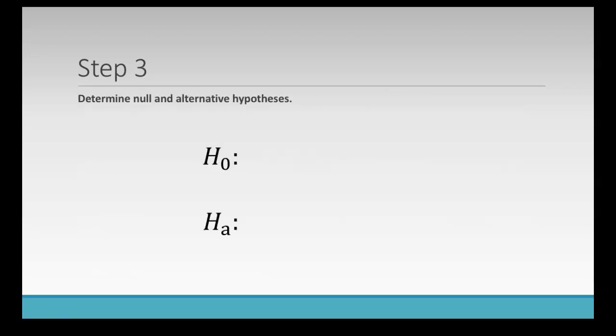Step three is to figure out which is the null hypothesis and which is the alternative hypothesis. Well the null hypothesis will always have the equality in it. So our null hypothesis here is mu is greater than or equal to nine, which leaves mu is less than nine as our alternative hypothesis.